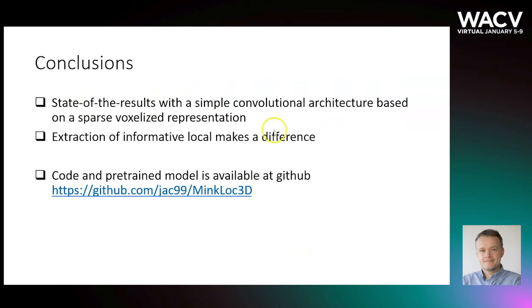To conclude, our method produces state-of-the-art results with a simpler architecture. The success is attributed to improvements in the local feature extraction part. By using 3D convolutions and a feature pyramid network design pattern, we are able to extract informative local features that can be combined using simple generalized mean pooling to produce a discriminative global descriptor. Our code and pre-trained model are available on GitHub. Thank you for your attention.